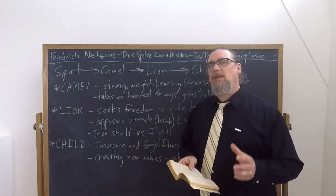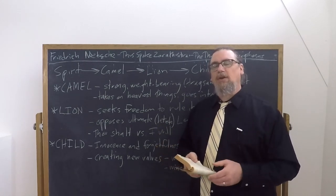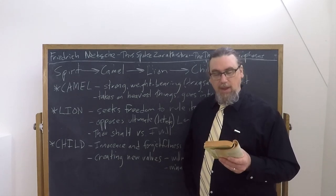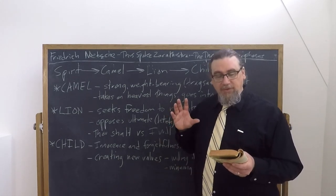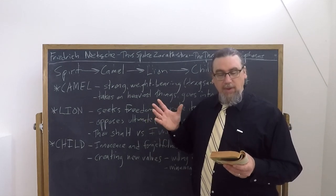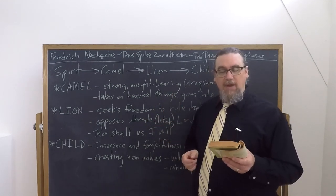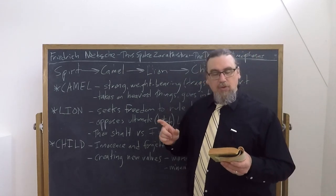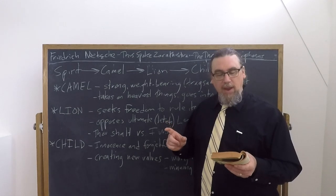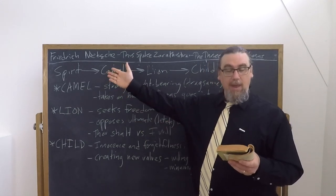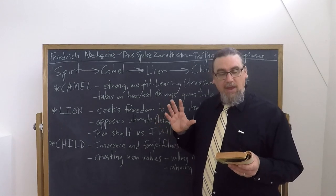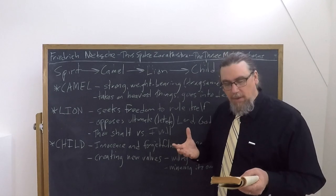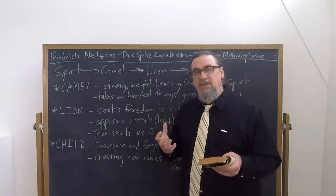The lion is not the final point though — you can't live just in rebellion or revolt or revolution. So he says: to seize the right to new values, that is the most terrible proceeding for a weight-bearing and reverential spirit. Truly, to the spirit it is a theft and work for an animal of prey. Once, as the camel, it loved that 'thou shalt' as its holiest thing. Now it has to find illusion and caprice even in the holiest, that it may steal freedom from its love. The lion is needed for this theft.